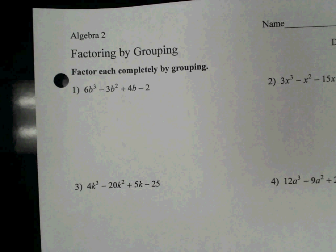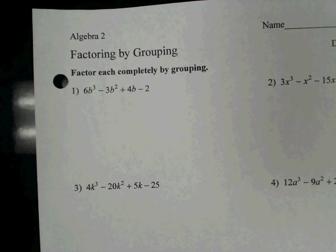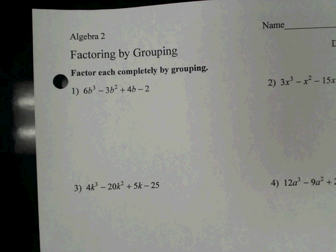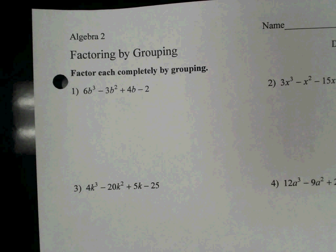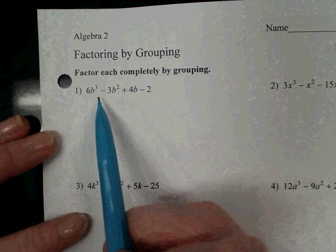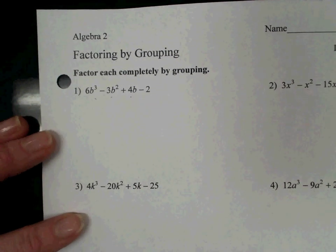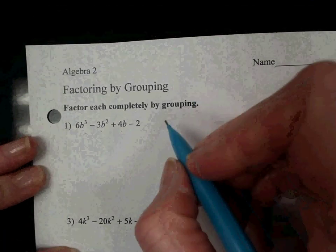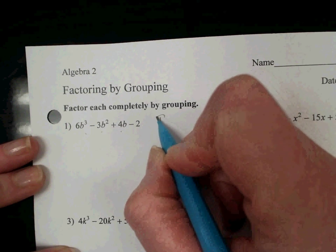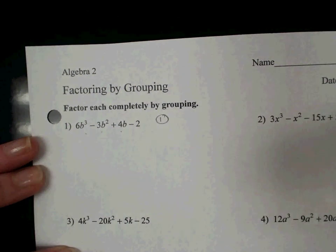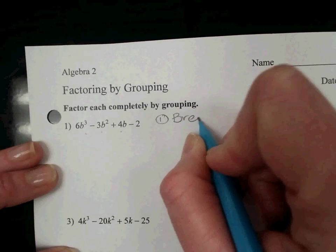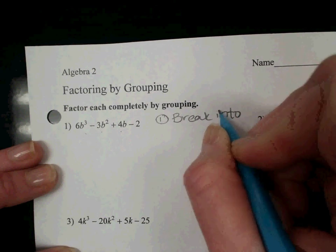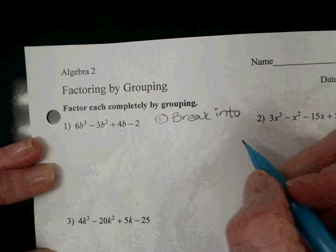So this is factoring by grouping. Some warning signs that you should factor by grouping, because you're going to have a variety of different problems that might say factor, and you have to decide which type of factoring you should use. If there are four terms, factoring by grouping is a good way to go.